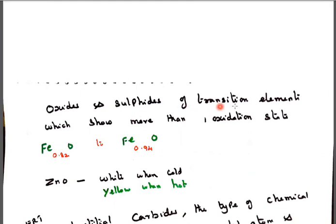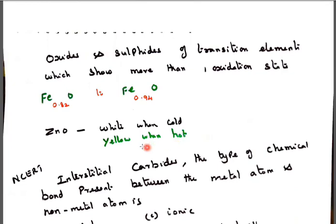Oxides and sulfides are transition elements which show more than one oxidation state. Because here, iron having 0.82 percentage and here 0.94 percentage means between 0.82 to 0.94, the percentage of iron will be combined with this oxygen. So oxygens as well as sulfide. Sulfide means sulfur will have the atomicity is 8.